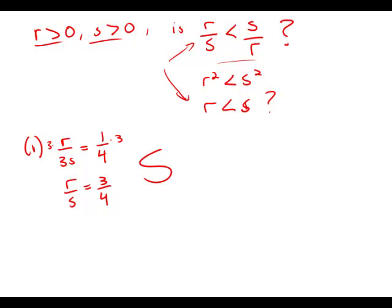Now forget statement number one — let's move to statement number two. Statement two tells us s equals r plus 4. If I take r, a positive number, and add 4, I get a bigger positive number. So this also means that s is greater than r. So statement two also is sufficient.